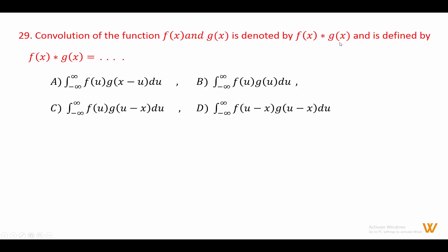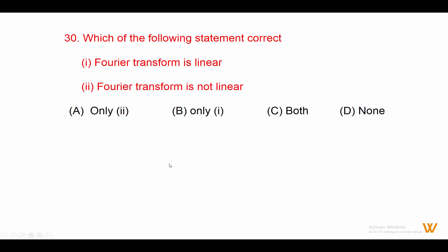Twenty-nine: the convolution of functions fx and gx is denoted by fx star gx and is defined as integration from minus infinity to plus infinity of f(u) g(x minus u) du. Answer is option A.